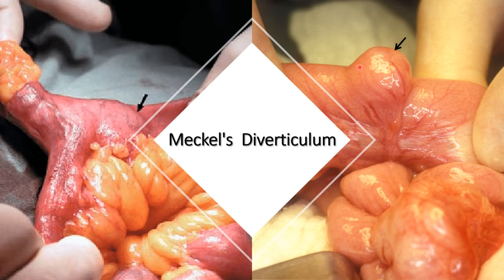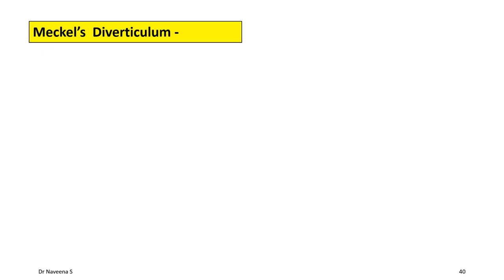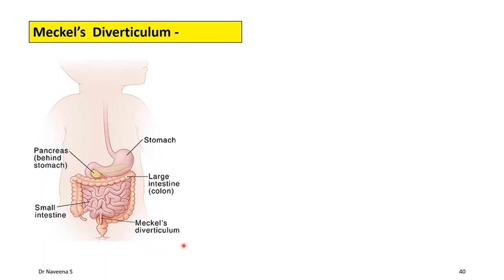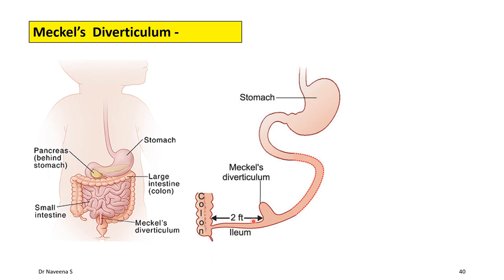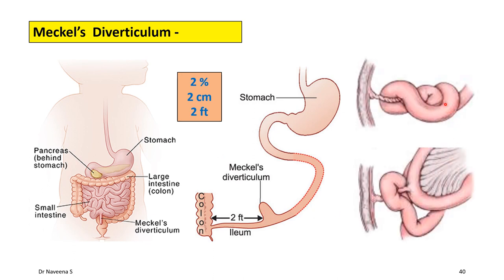A few points about Meckel's diverticulum are noteworthy. It is seen in 2% of individuals, is located at the terminal part of the ileum with a length of 2 cm, and is placed 2 feet from the ileocecal junction. The rule of twos: seen in 2% of individuals, 2 cm in length, and lies 2 feet from the ileocecal junction. The distal part of the Meckel's diverticulum may be free or connected to the anterior abdominal wall by a fibrous band or vitelline ligament, and intestinal coils may loop around this fibrous band causing intestinal obstruction.